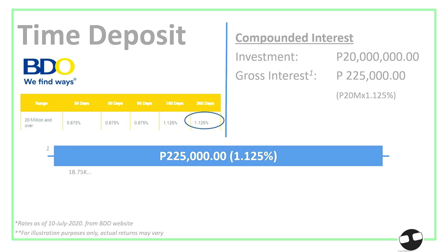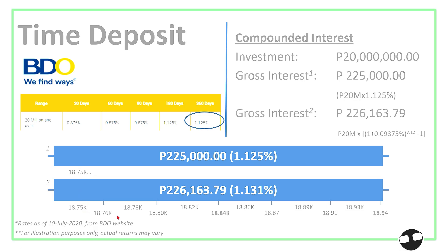But what if you want to roll over the interest amount? That creates a compounding effect. Your interest on the first month is the same, but on the second and third months it's different. On the second month, your principal is 20 million plus your first interest of 18,750. And on, say, the sixth month, your principal is 20 million plus the interest accumulated from all previous months. So there's a compounding effect, and instead of 225,000, you would earn more — that's 226,163.79 in a span of one year, which is effectively 1.131%, higher than the original interest rate of 1.125%.